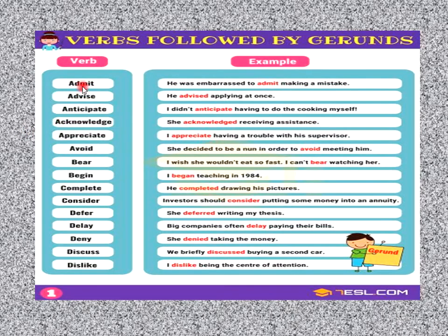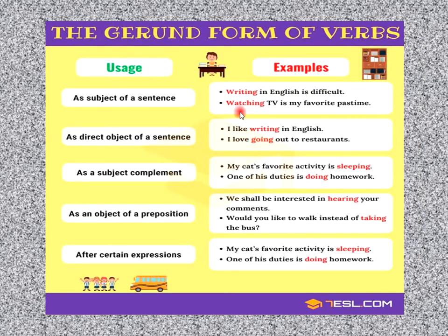Let's have a look at some more examples. The verb is 'admit,' so we put -ing with it to make it a gerund — like admitting. Similarly: advising, applying, anticipating, having. You can see the usage of gerund here.